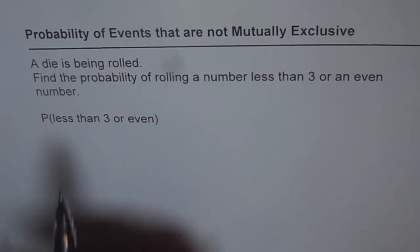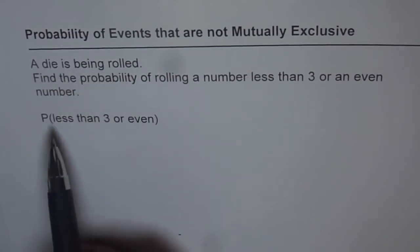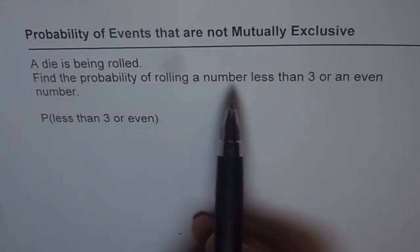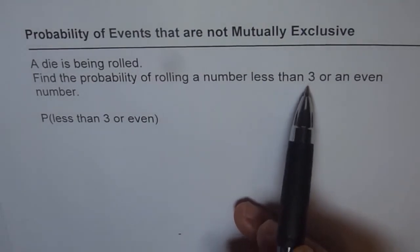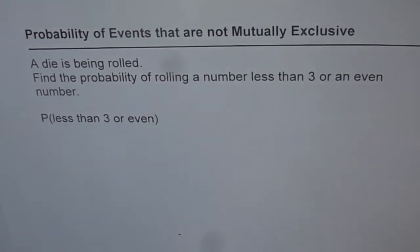Now here is an example. A die is being rolled. Find the probability of rolling a number less than 3 or an even number. Let's try to understand this question.